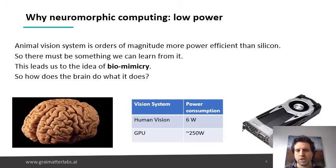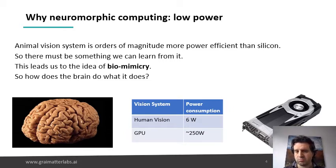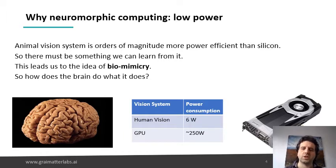The human brain spends about six watts of power to process vision. A GPU will process in the order of 250 watts. So we want to try to understand how the brain works because we actually can gain a lot in terms of power consumption from it.